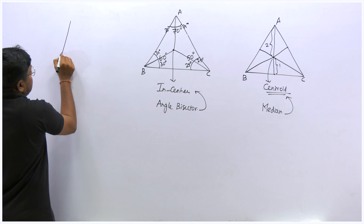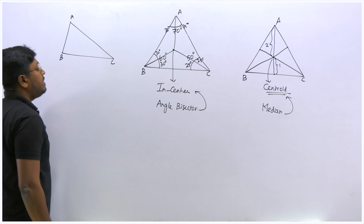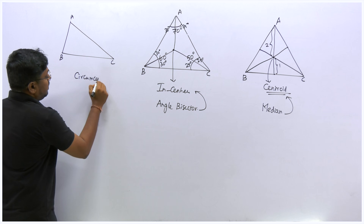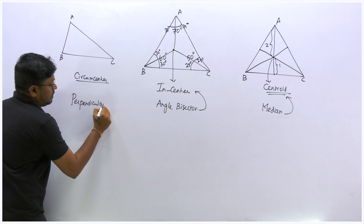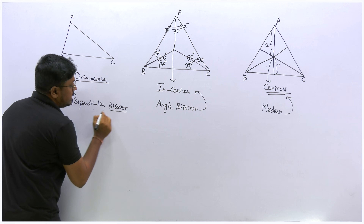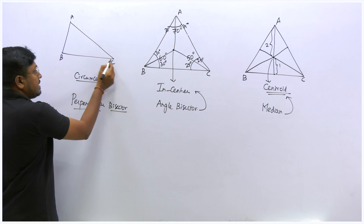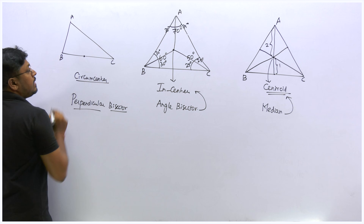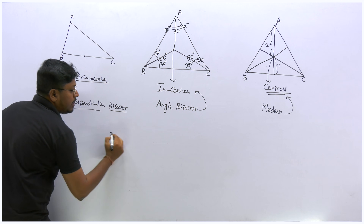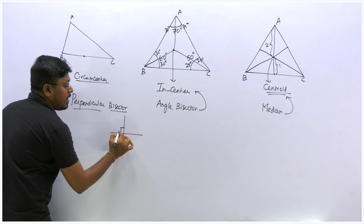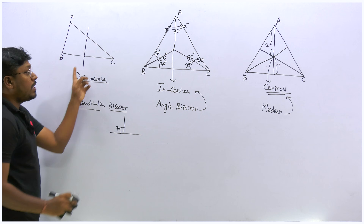Now for the circumcenter. Take triangle ABC. The key word for circumcenter is perpendicular bisector. Find the midpoint of side BC. From this midpoint, draw a perpendicular line — a line making exactly 90° — which is called a perpendicular bisector. The difference from the median is that here we draw a perpendicular from the midpoint, whereas for the median we connect the midpoint to the opposite vertex.